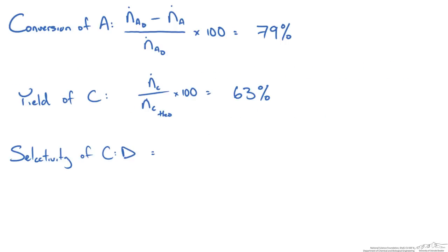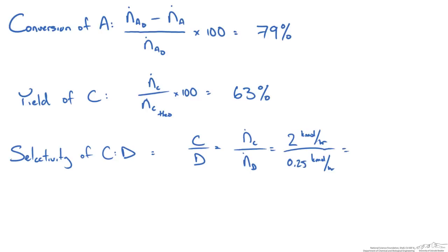With two reactions, we also look at the selectivity of the desired product to the undesired product. We calculate the ratio of moles of C produced to moles of D produced. This tells us that this reactor, under these conditions, produces 8 kmol of C per kmol of D — that is our selectivity of C to D.